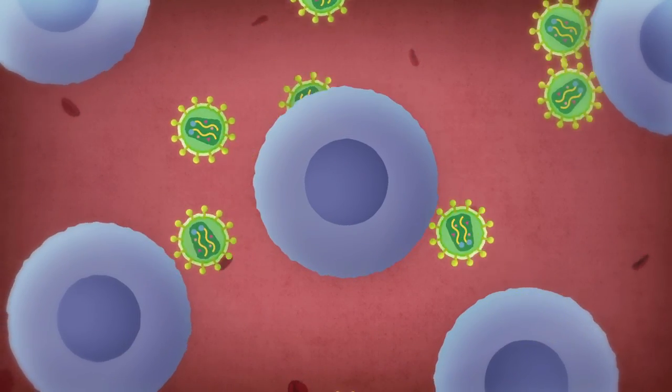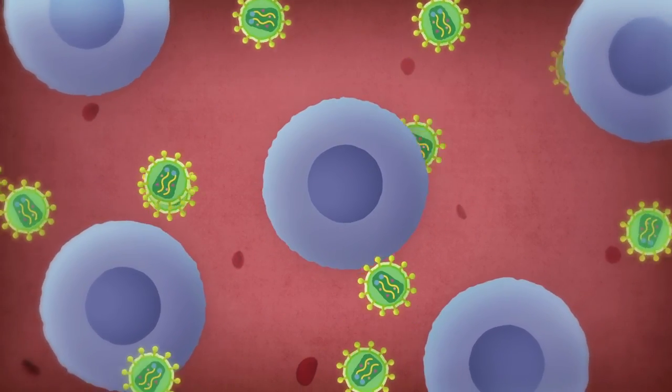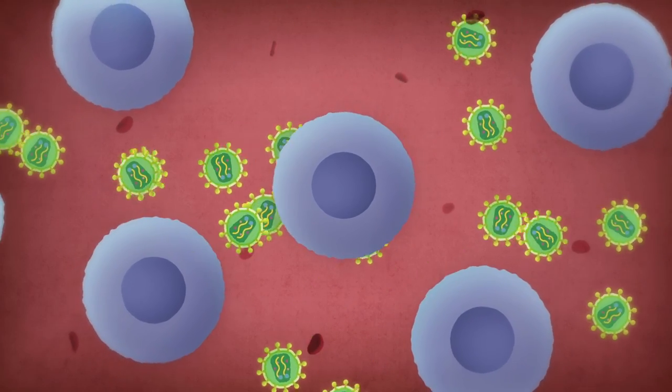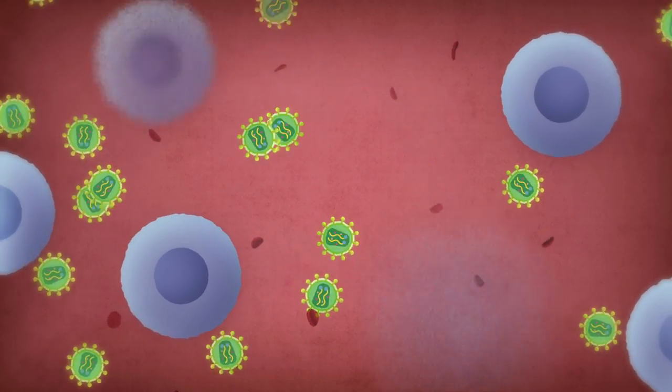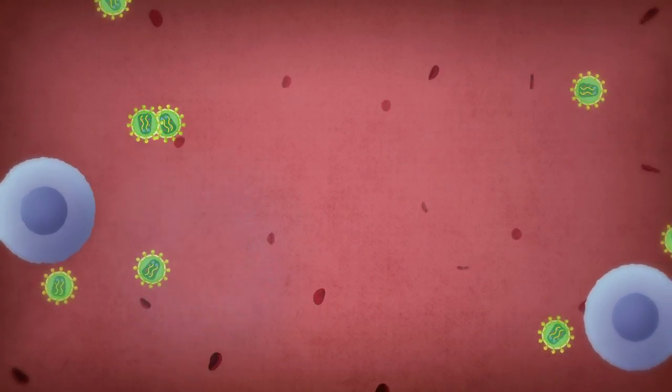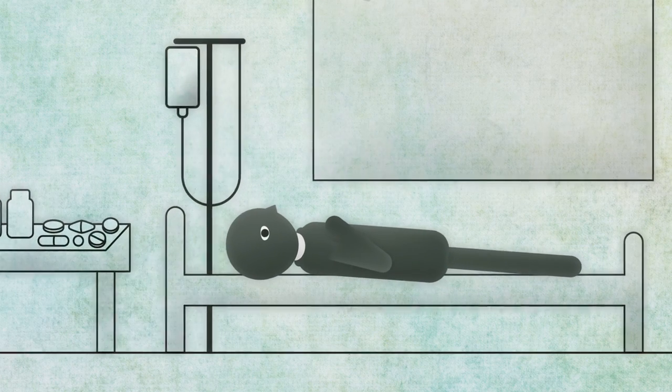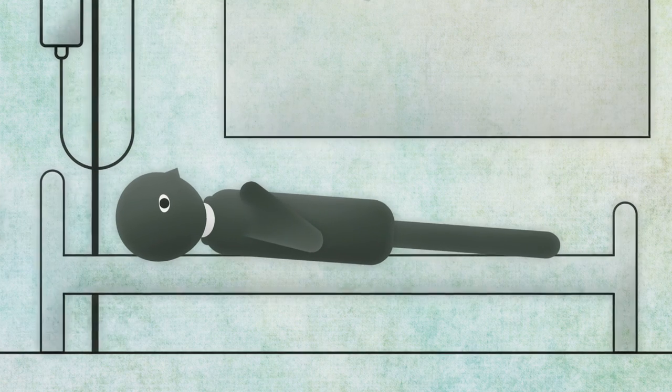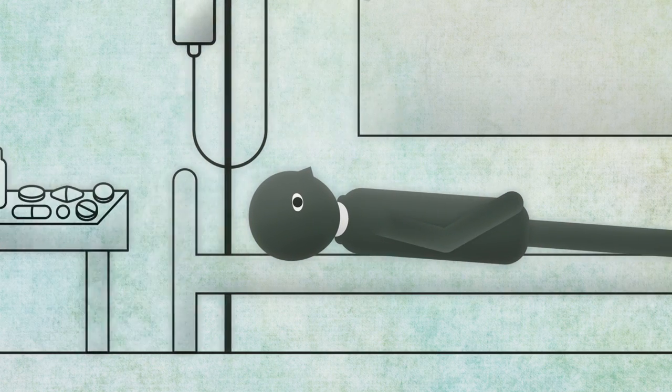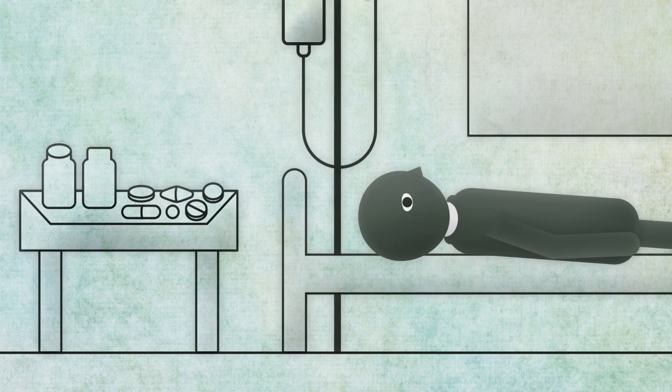Third stage: the immune system is overwhelmed. The number of CD4 cells plummets, and the virus proclaims itself the victor. The HIV-infected person falls ill with AIDS and becomes easy prey for opportunistic infections, such as tuberculosis.